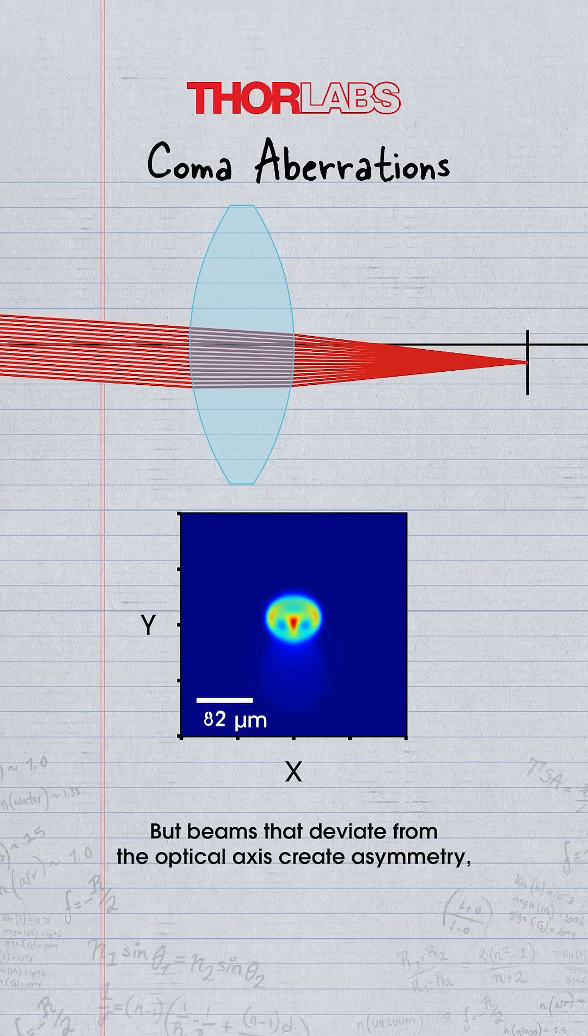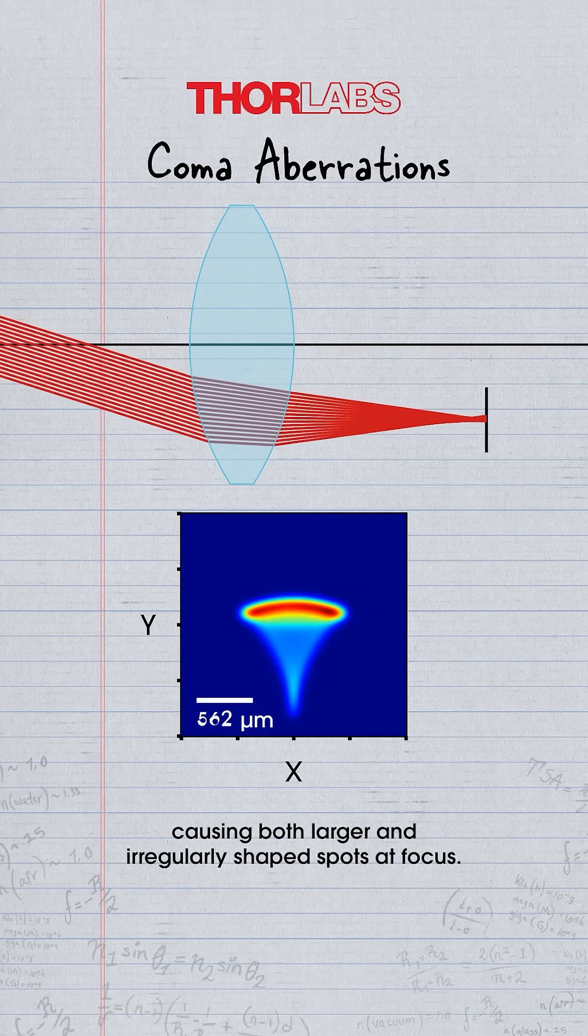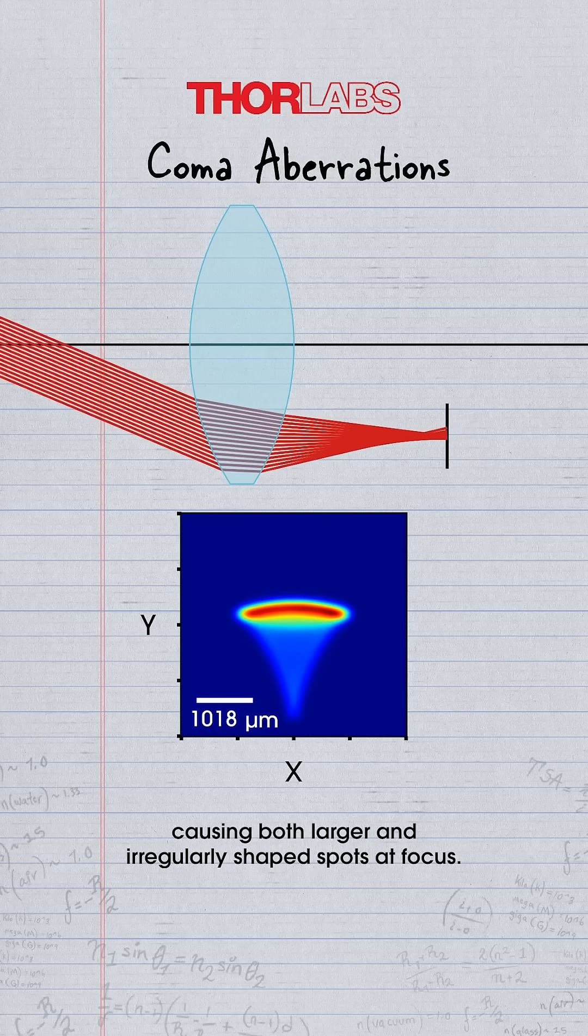But beams that deviate from the optical axis create asymmetry, causing both larger and irregularly shaped spots at focus.